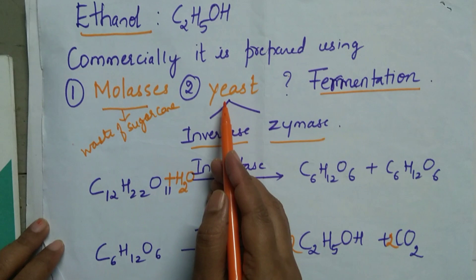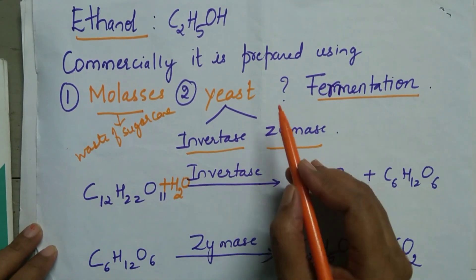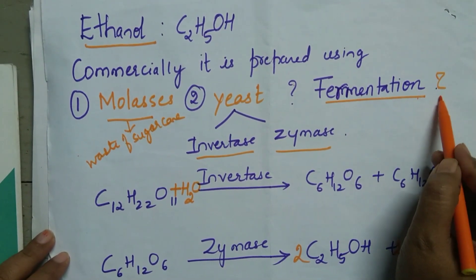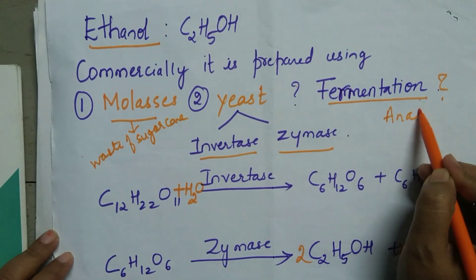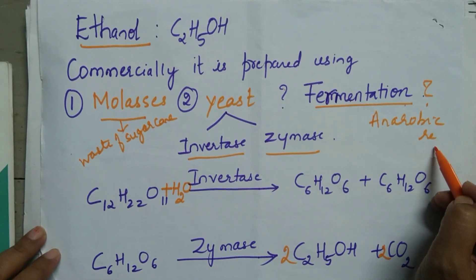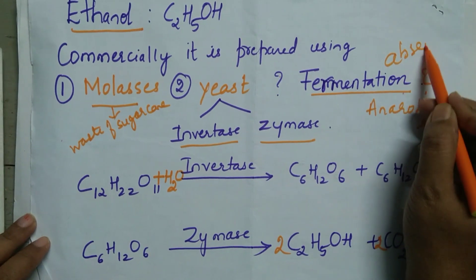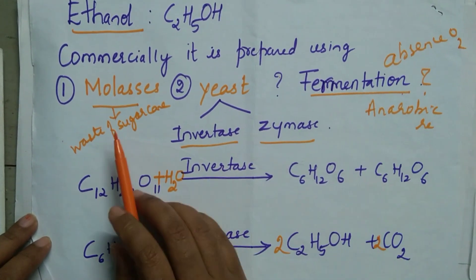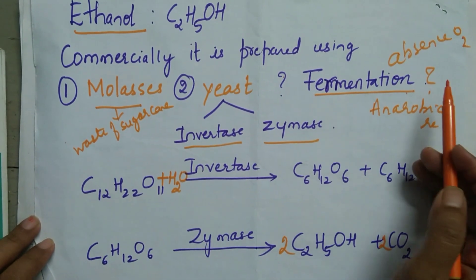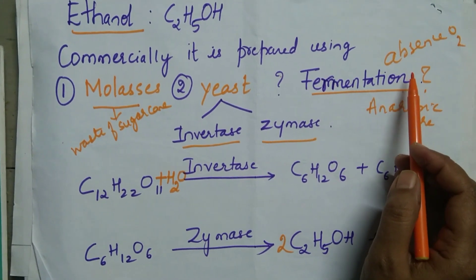These two enzymes are mixed and subjected to hydrolysis at a particular temperature, and the process is called fermentation. Fermentation is anaerobic respiration — a reaction carried out in the absence of oxygen. Molasses and yeast are mixed at around room temperature and subjected to fermentation.